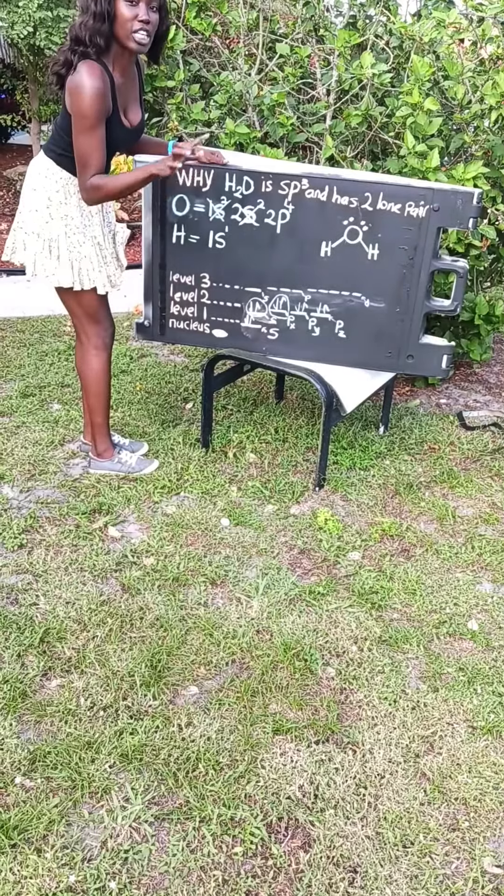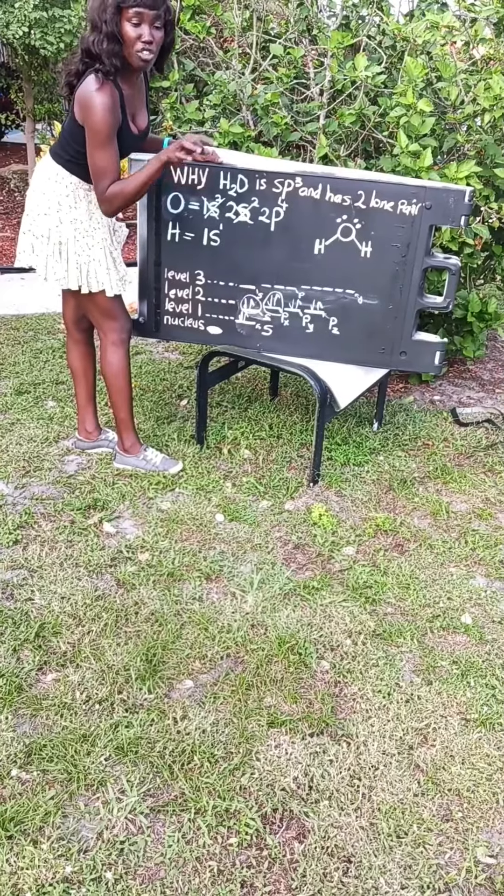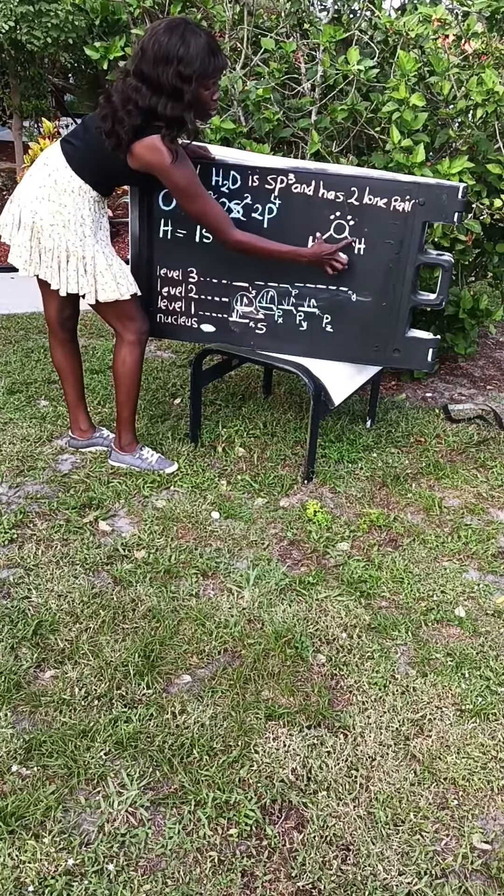This is why water, even though it's tetrahedral, has a 104.5 versus a 109 degree angle because of these two lone pairs pushing on these bonded angles, pushing it closer together.